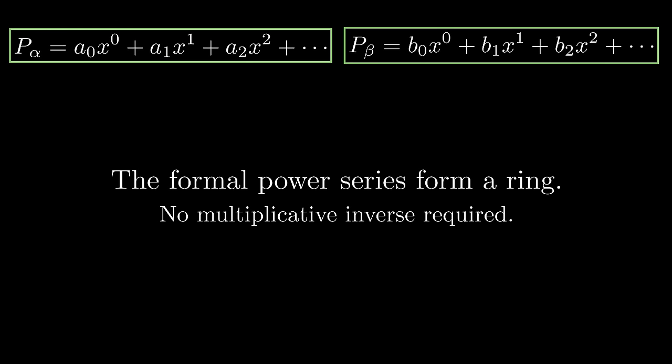And the multiplicative identity, or multiplication identity, is x to the power of 0. According to the exponentiation rule, multiplying one power series with x to the power of 0 doesn't change anything.